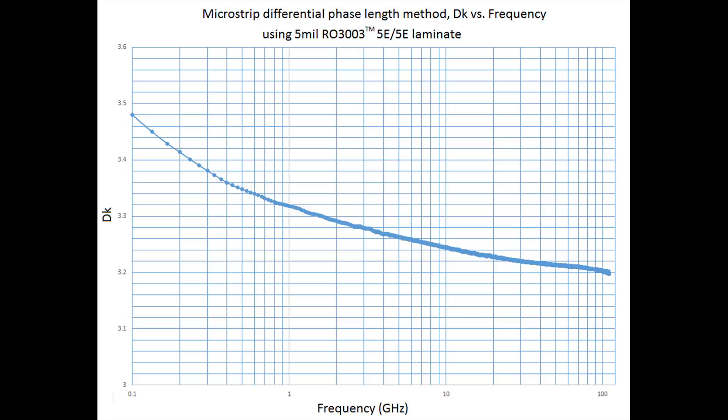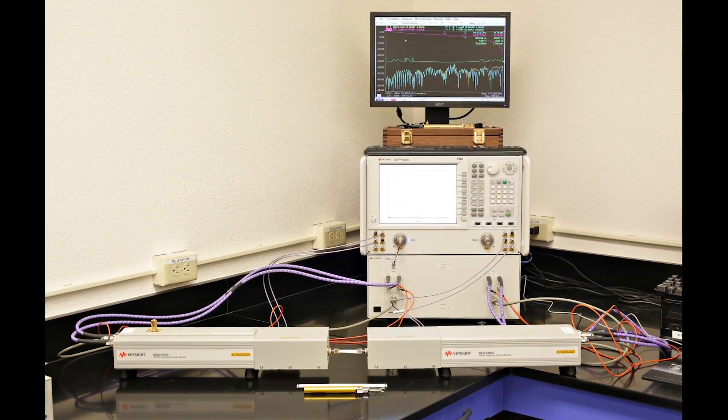In this graph you can see that the frequency is a very wide range where we start at 0.1 gigahertz or 100 megahertz and go all the way out to 110 gigahertz. This is the phase response measurements giving us the dielectric constant of the material, in this case 5 mil RO3003 material, from about 100 megahertz to 110 gigahertz using a network analyzer that's capable of this.